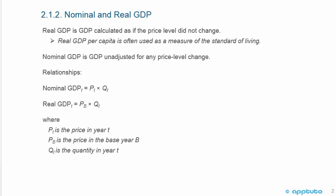Nominal GDP is GDP unadjusted for any price level change. The relationship is: Nominal GDP equals PT, which is the price in year T, times QT, the quantity in year T. Real GDP equals PB, which is the price in the base year, times QT, which is the quantity in year T.